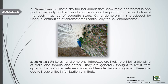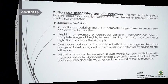The fourth type of sex-associated variation is the intersex. Unlike gynandomorph, an intersex exhibits a blending of male and female characters throughout the whole body. Intersexes are generally thought to result from an upset in the balance between male- and female-tendency genes, due to irregularity in fertilization or mitosis. In gynandomorph we can distinguish which side is male or female, but in intersexes the blend of chromosomes means we cannot clearly say whether the individual is male or female.